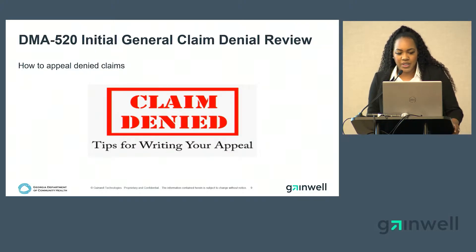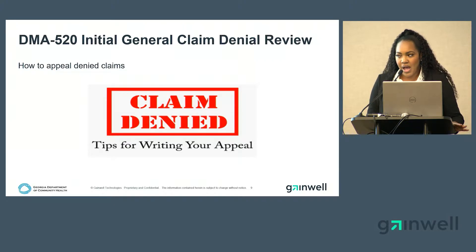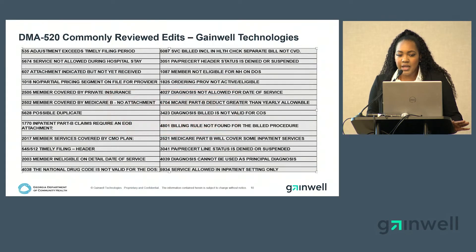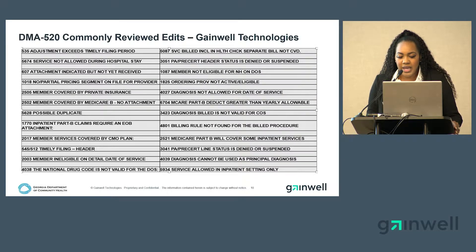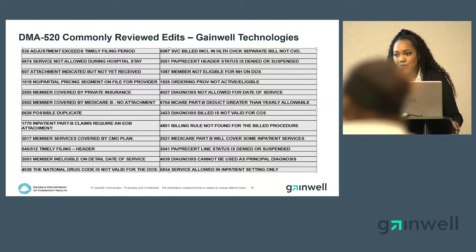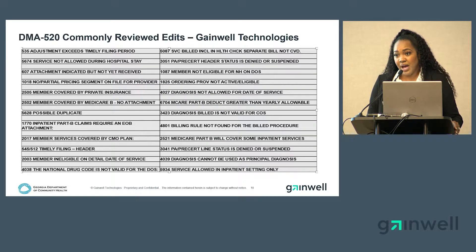DMA 520 initial general claim denial review — now we're going to talk about how to appeal denied claims. Here is a list of commonly reviewed edits for which you will file a DMA 520. These are non-medical edits. To name a few: edit 4801, billing rule not found for billed procedure, or the ones we see very often — 545 or 512, which is timely filing. You can submit a DMA 520 for those edits.